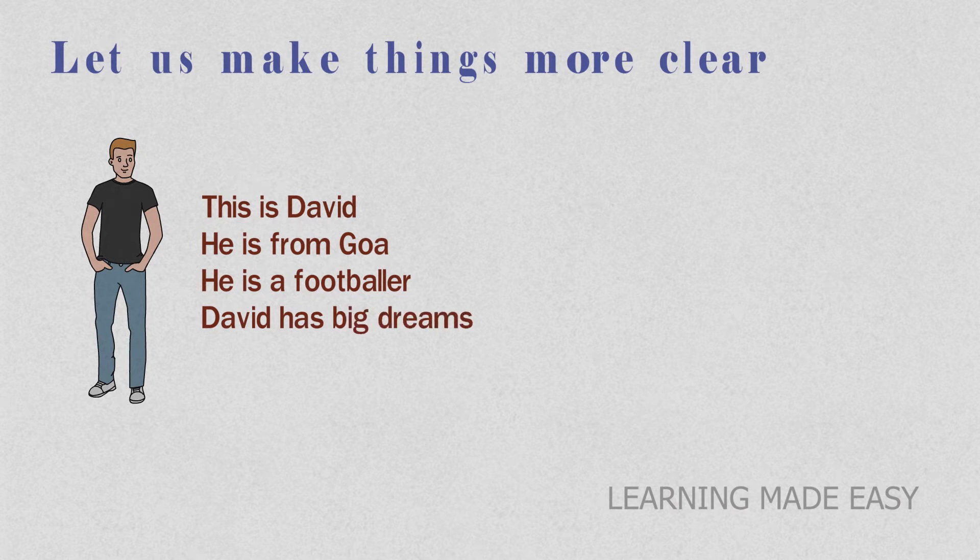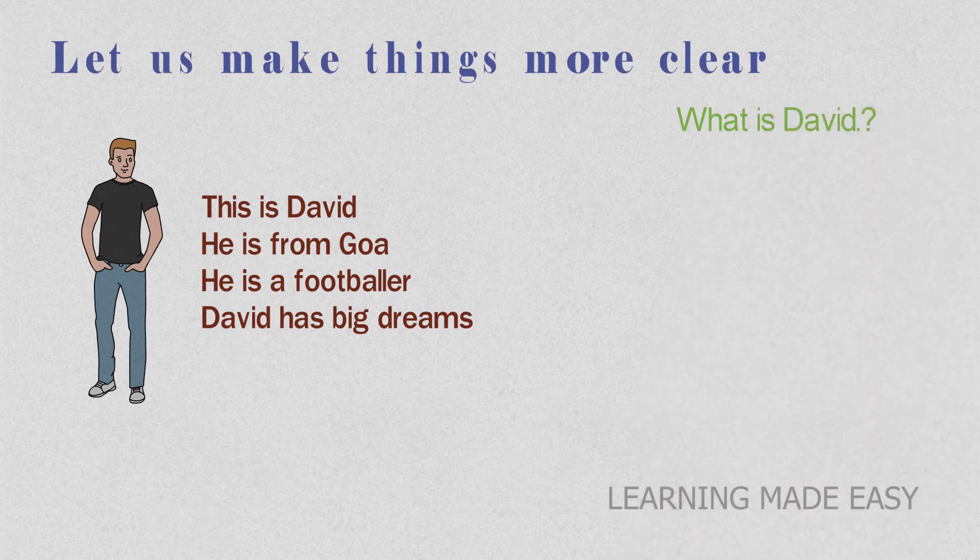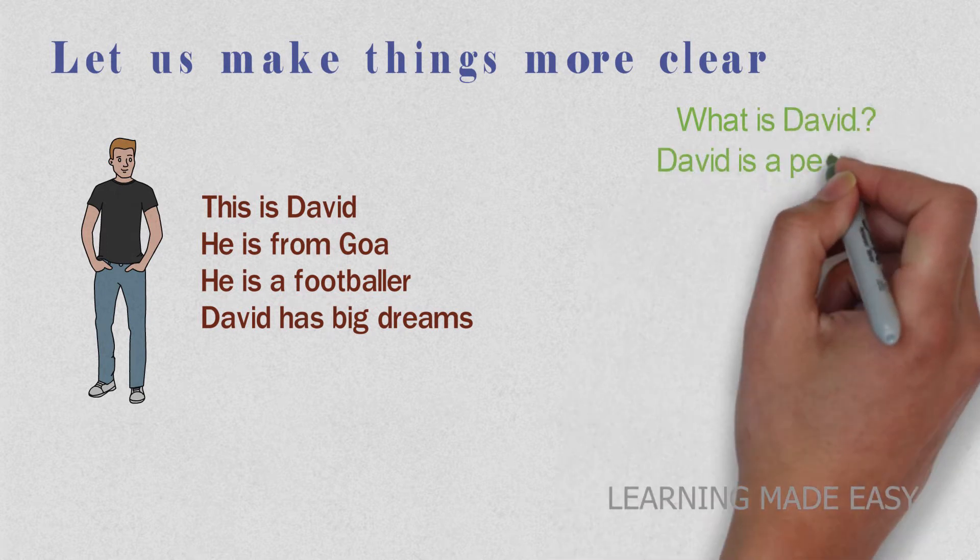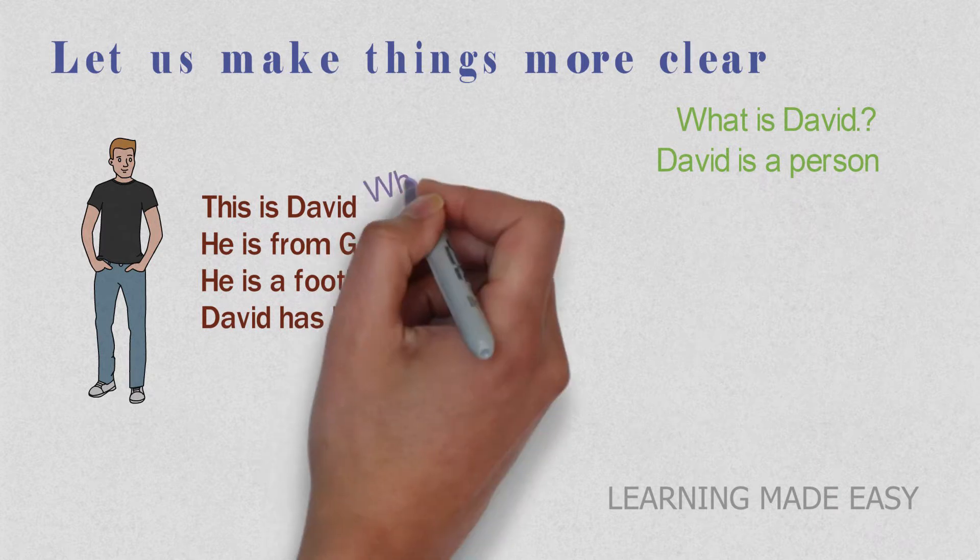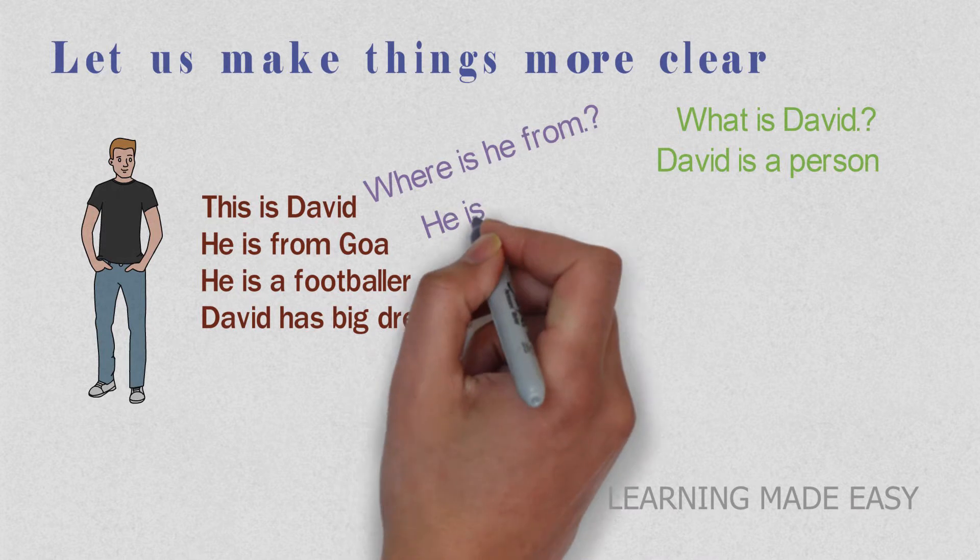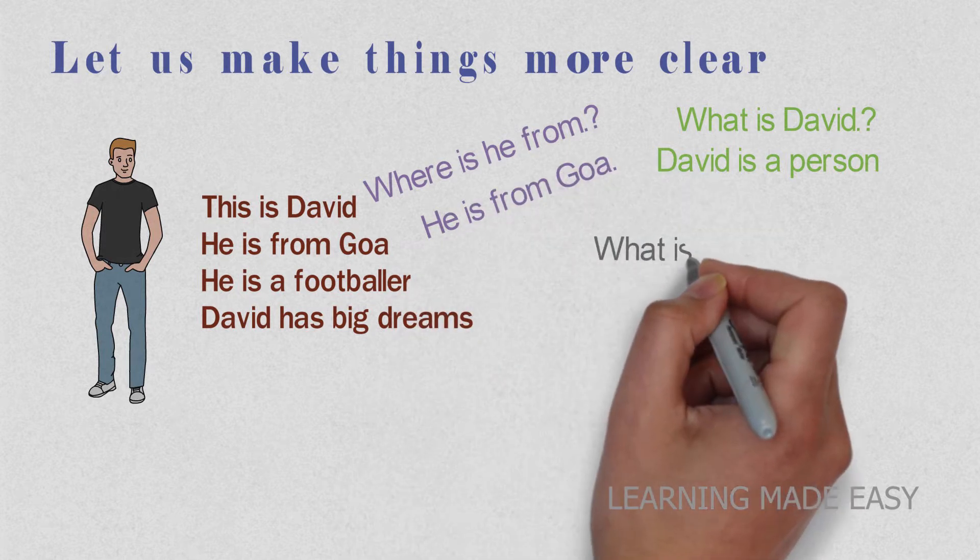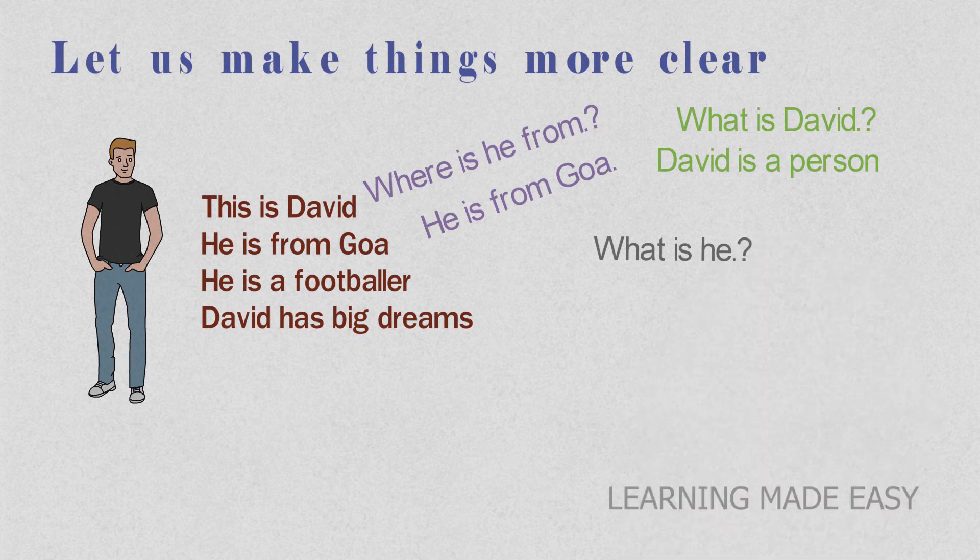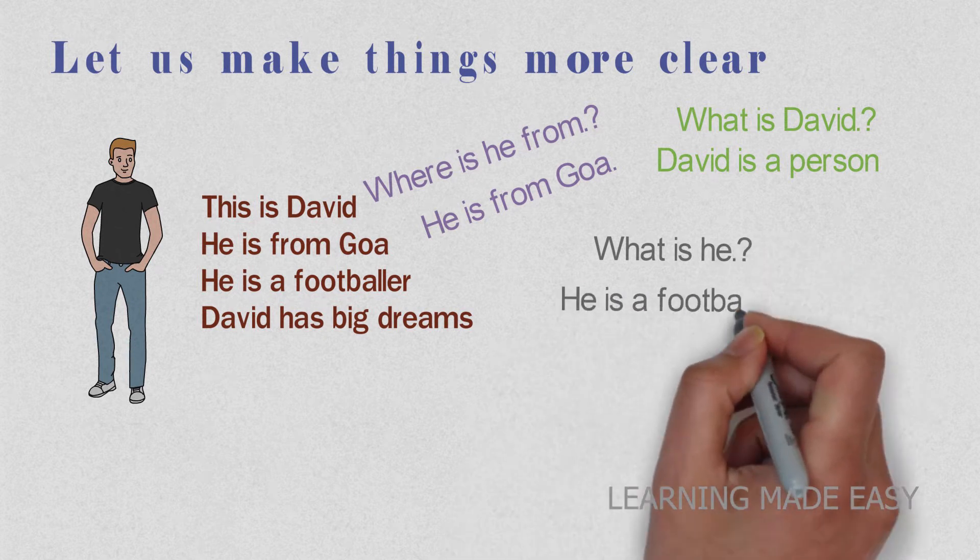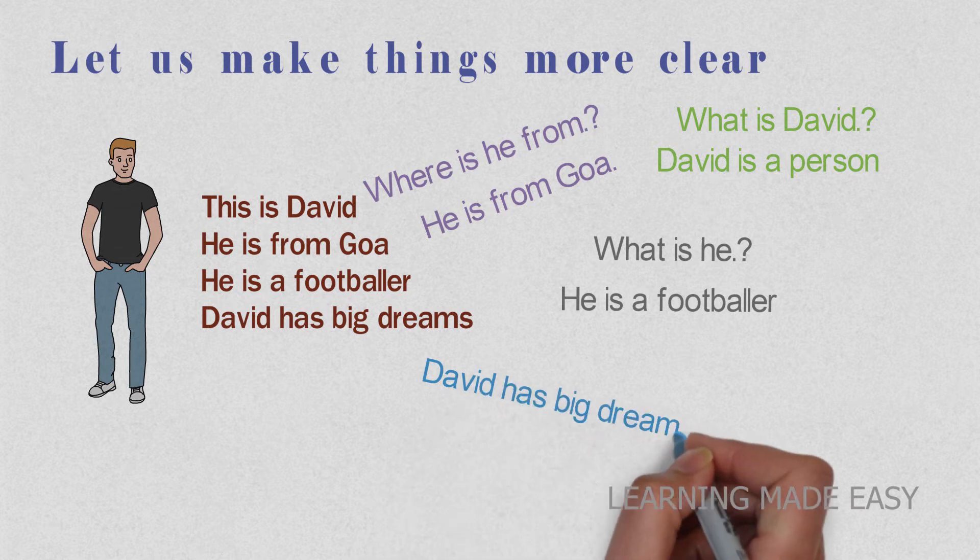So there are some questions by which we can come to the conclusion that it's a noun or not. What is David? David is a person. Where is he from? He is from Goa. What is he? He's a footballer. And then David has big dreams too.